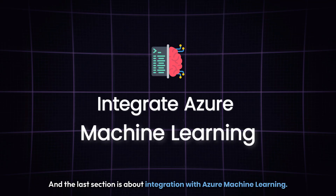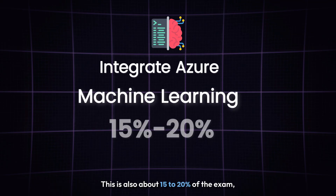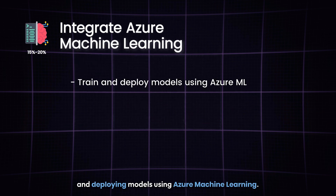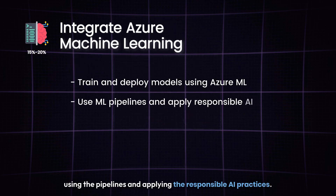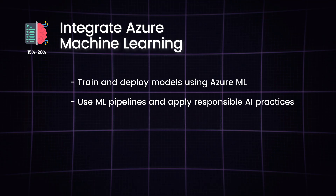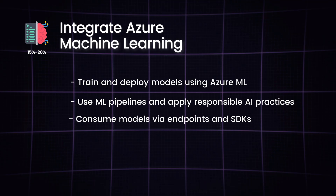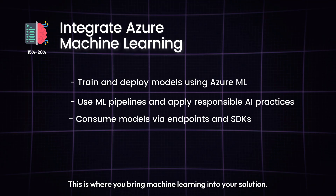The last section is about Integration with Azure Machine Learning. This is also about 15 to 20% of the exam, where you'll need to know about training and deploying models using Azure Machine Learning, using pipelines, and applying responsible AI practices. Finally, you'll learn how to consume models using endpoints and SDKs. This is where you bring machine learning into your solution.